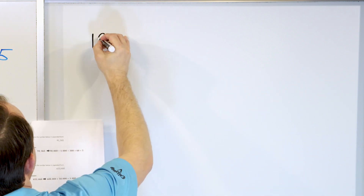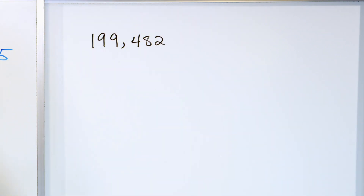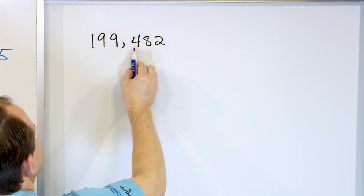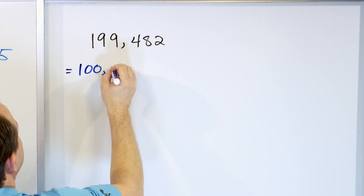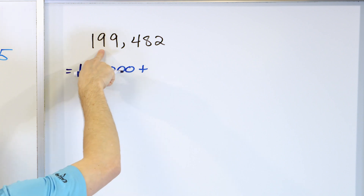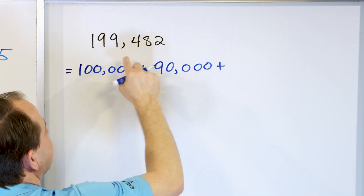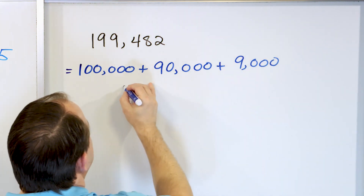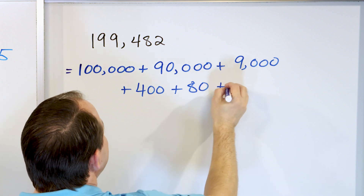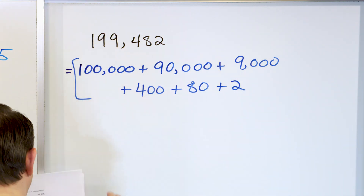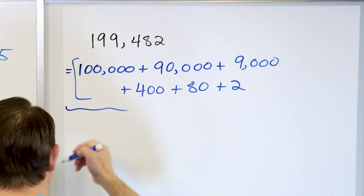Let's say that we have the number 199,482. This is the ones, tens, hundreds, thousands, ten-thousands, hundred-thousands. We have one of them, so it's really worth 100,000. The 9 is in the ten-thousands place but we have nine of them, so it's worth 90,000. The next 9 is in the thousands place, so it's worth 9,000. The 4 is in the hundreds, so it's worth 400. The 8 is in the tens, which means it's worth 80. And the 2 is just in the ones place. So we have 100,000 plus 90,000 plus 9,000 plus 400 plus 80 plus 2. This is expanded form for this number.